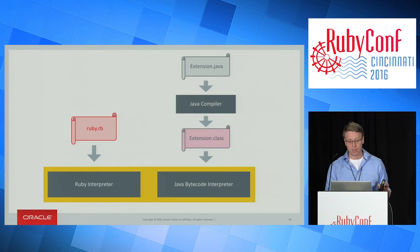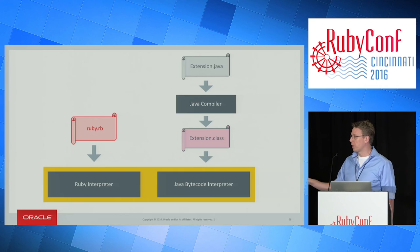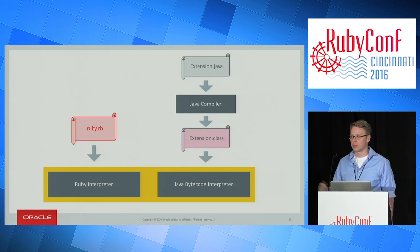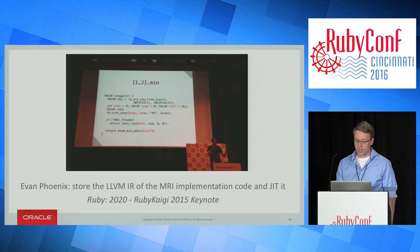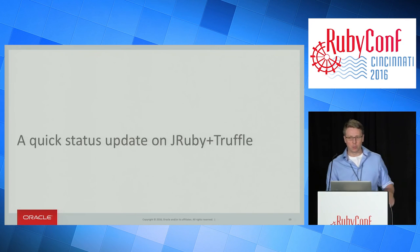This idea could also be a direction for MRI. Evan Phoenix at RubyKaigi talked about the idea of storing the LLVM IR of the MRI implementation code and using it to JIT at runtime — that's a similar approach to what we're doing. That's it for my talk about C extensions, but let me give a quick status update on JRuby Truffle in general.